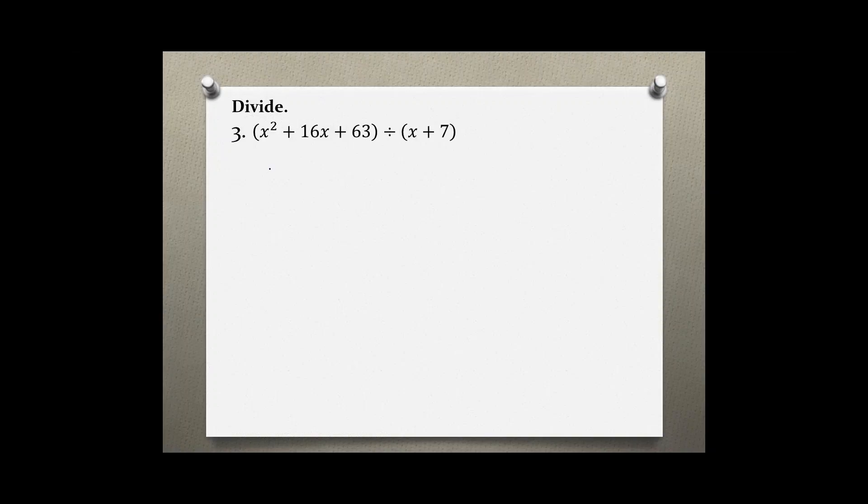We have to set up our division by writing the divisor first, which is x plus 7, and then under the fraction bar we write our dividend, which is x squared plus 16x plus 63.